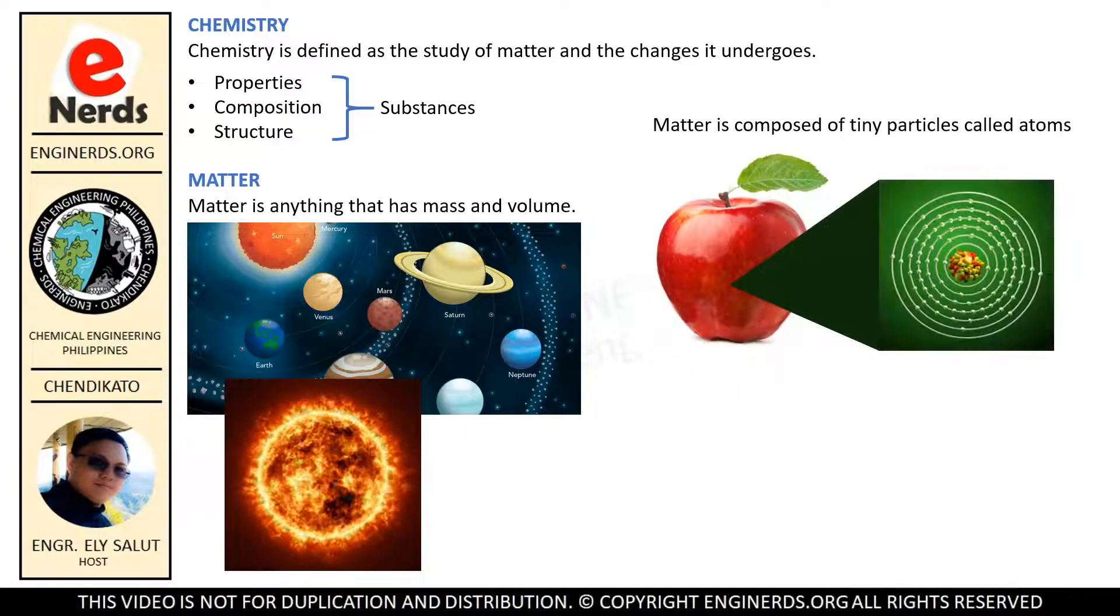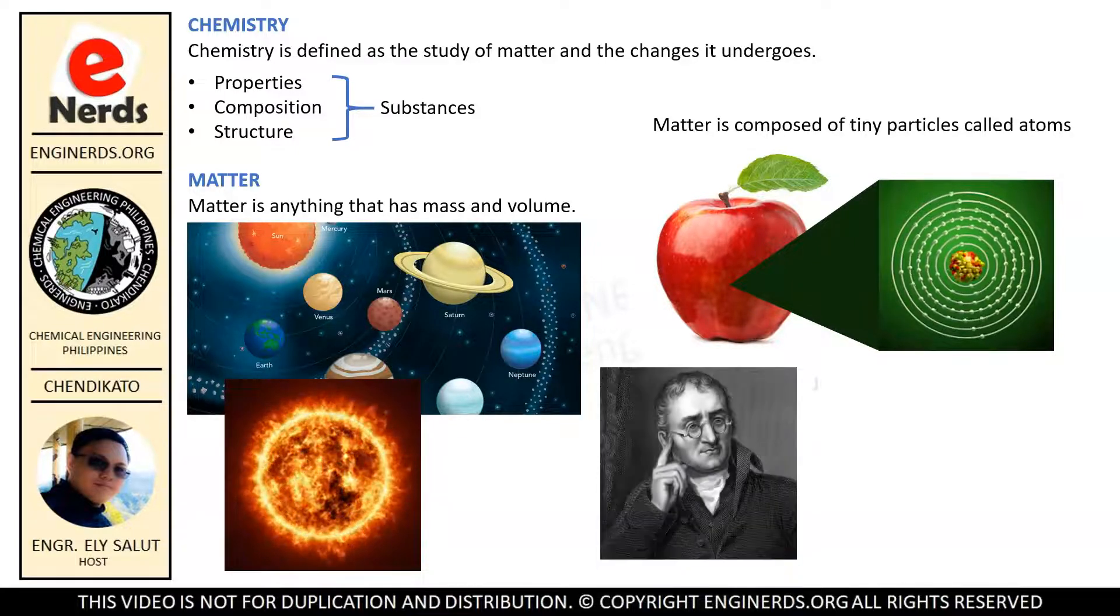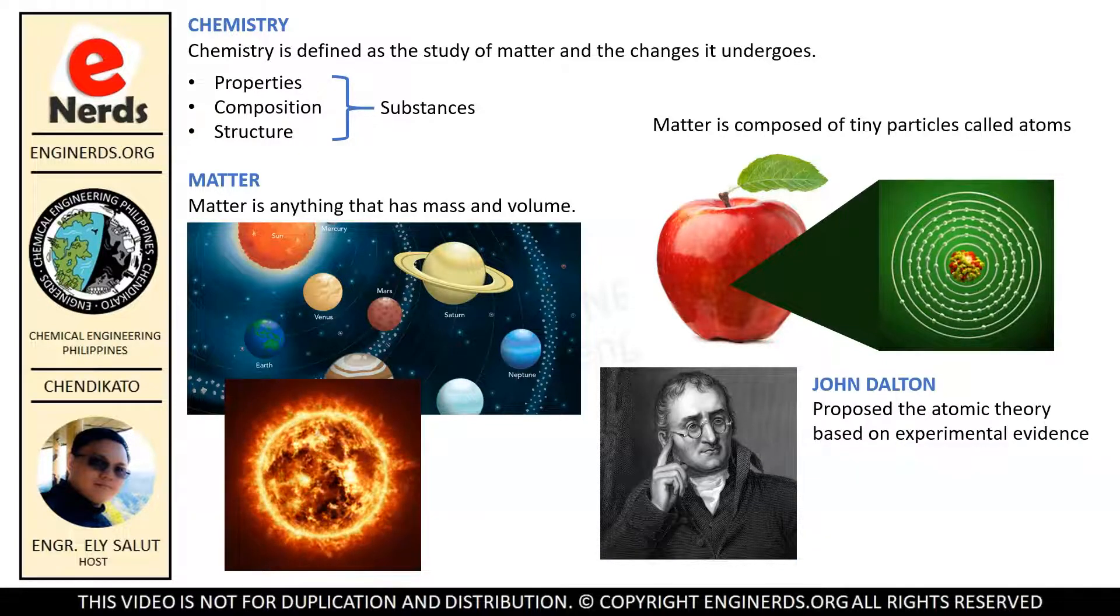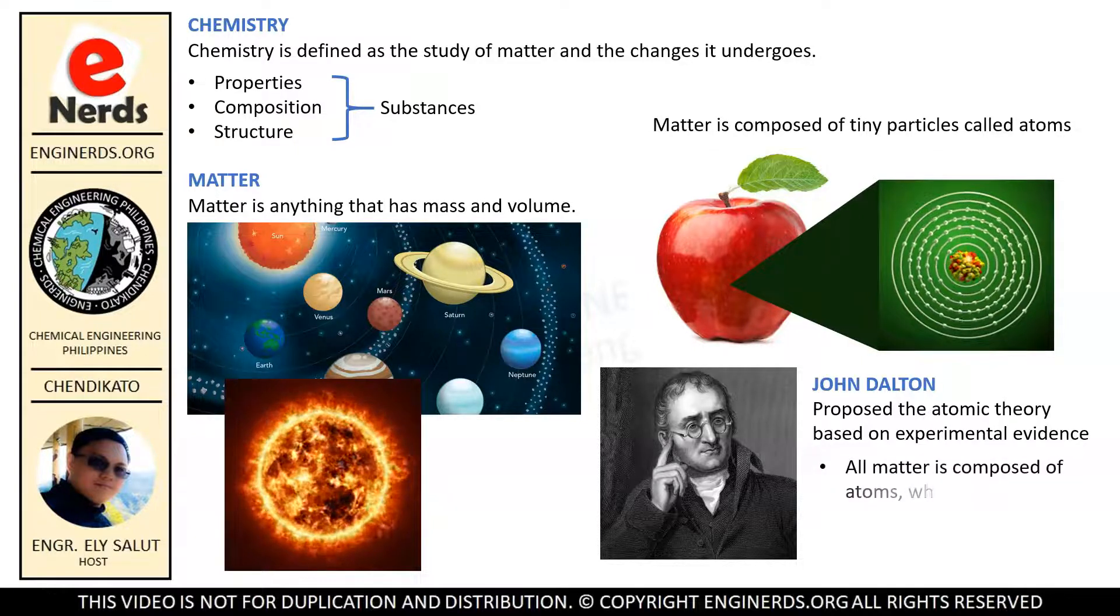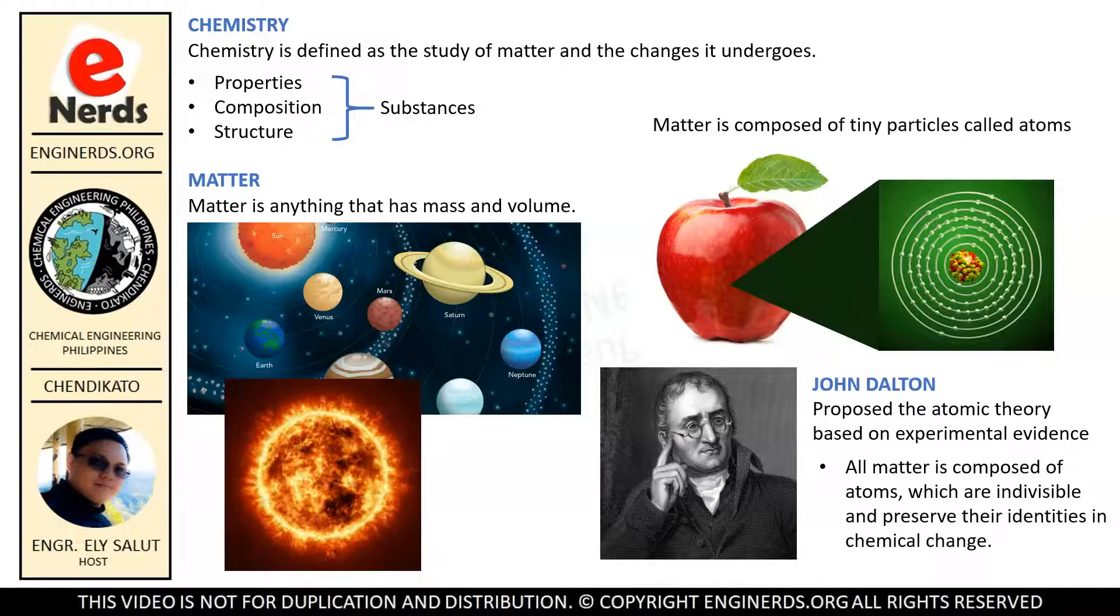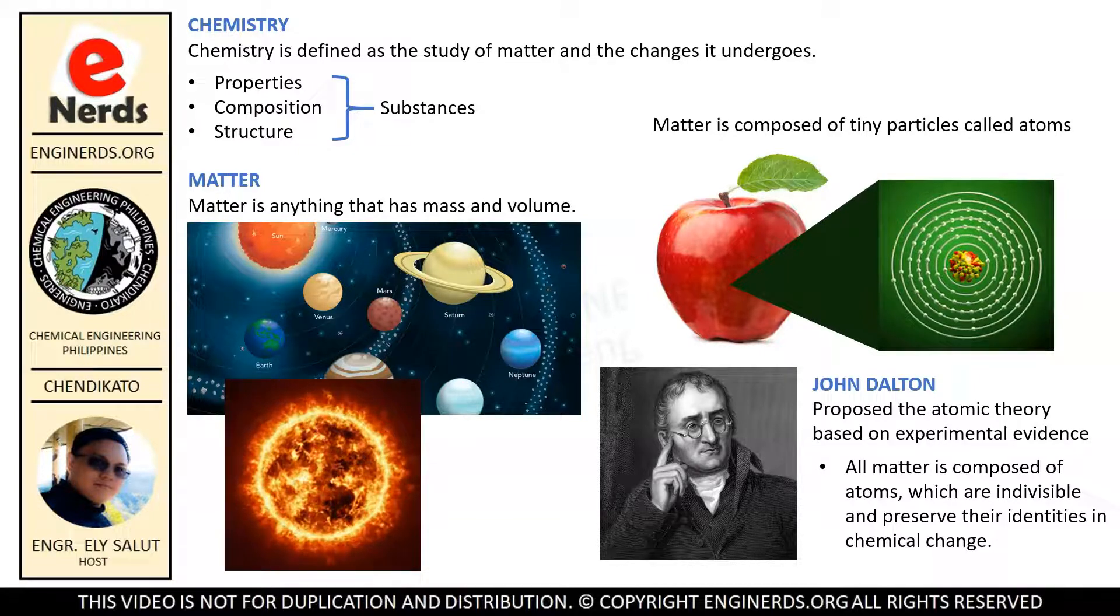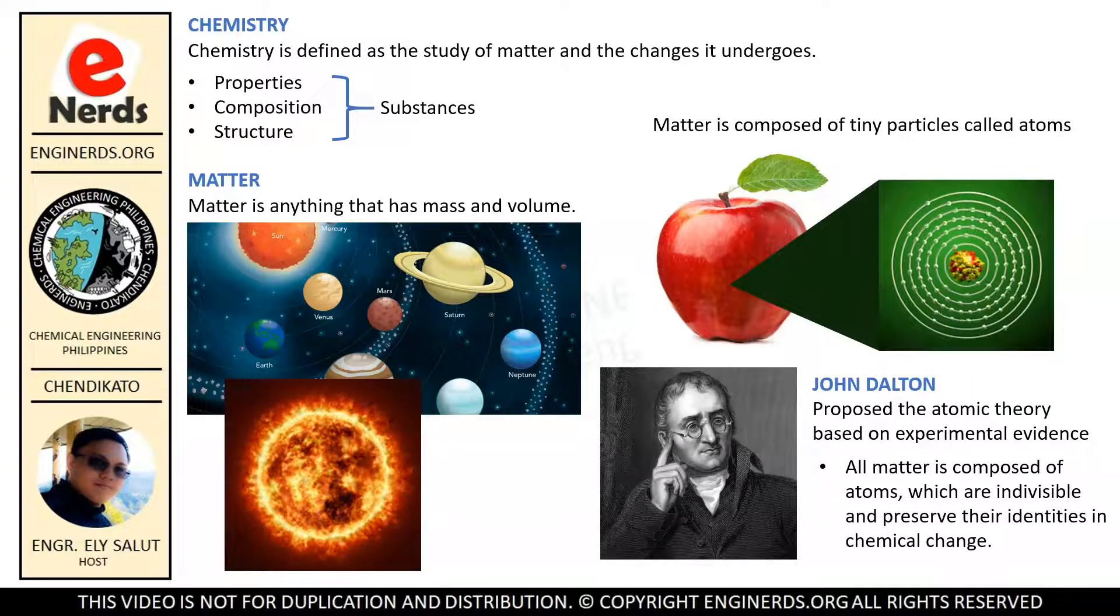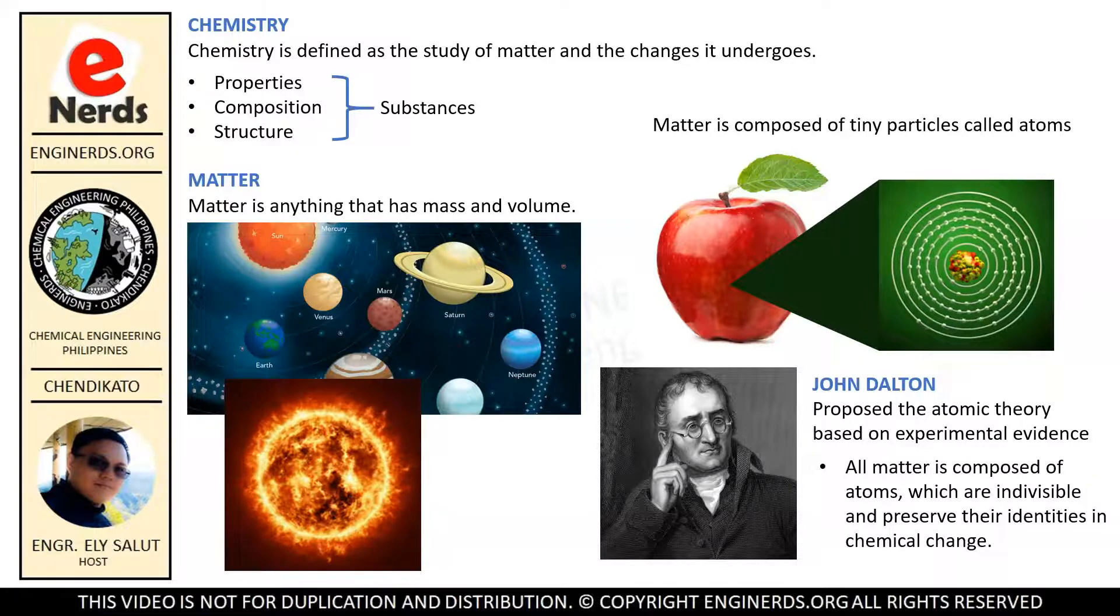Even though this idea had first been proposed by the ancient Greeks, it wasn't until about 1803 that the English chemist John Dalton proposed his atomic theory based on experimental evidence. The main points of Dalton's theory were that all matter is composed of atoms, which are indivisible and preserve their identity in chemical changes. Also, he said that all atoms of a given element are identical in all properties, and that when atoms combine to form molecules, they do so in the ratio of small whole numbers.